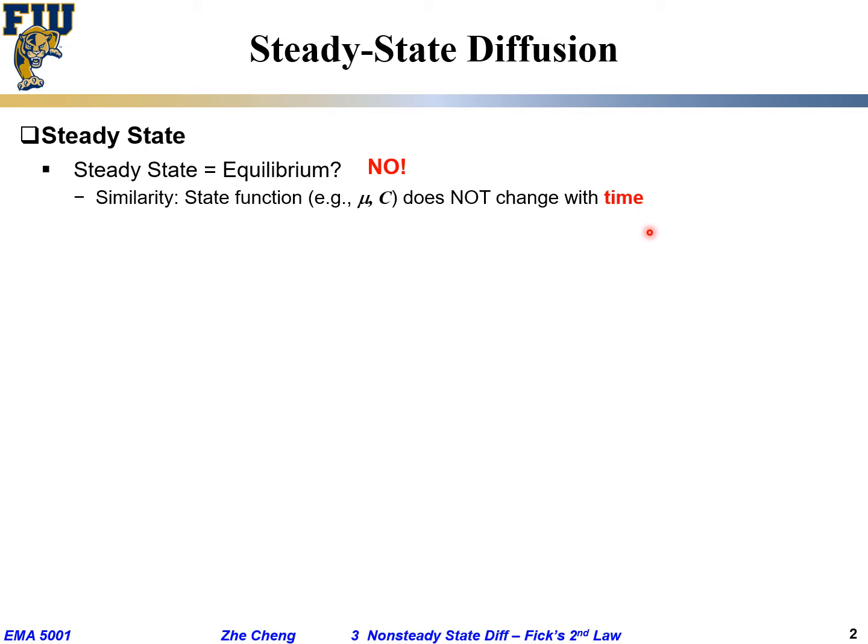Equilibrium means it stays here, you check back one day, check back one year, as long as you don't change the temperature, pressure, etc., nothing really changes. Steady-state, as long as you maintain something, and we are going to talk about that something, then temperature and concentration doesn't also really change with time. That's similarity, there are similarities between these two terminologies.